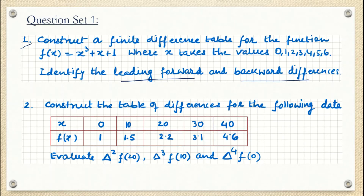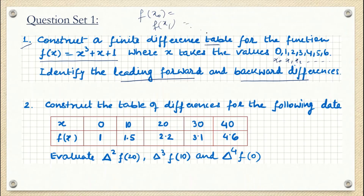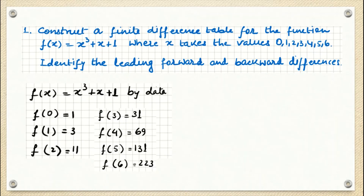They are asking us to construct a finite difference table. A function is given and the values of x — x₀, x₁, x₂ — are given as 0 through 6. We put those values into the equation to find f(x₀) through f(x₆), giving us y₀, y₁, y₂, y₃, y₄, y₅, and y₆.